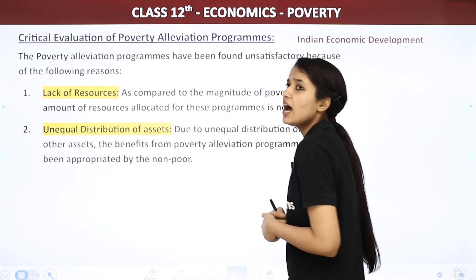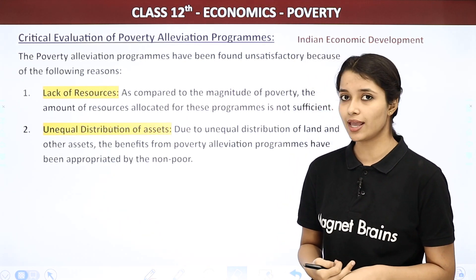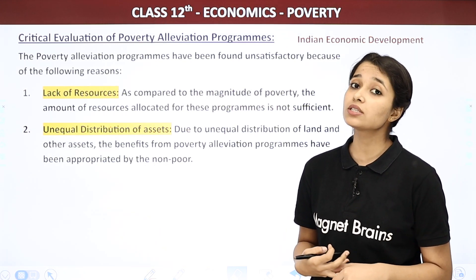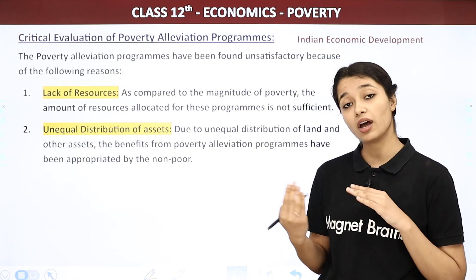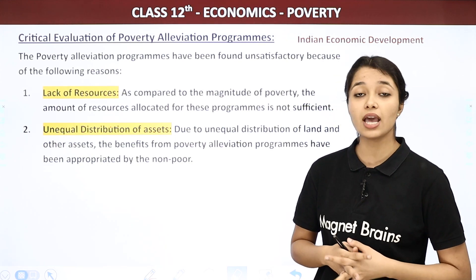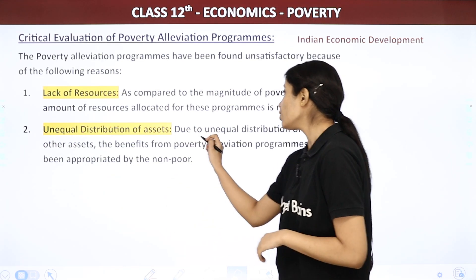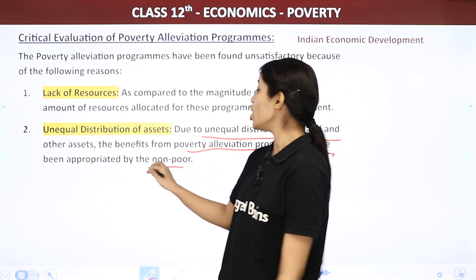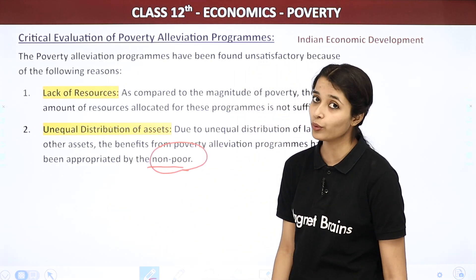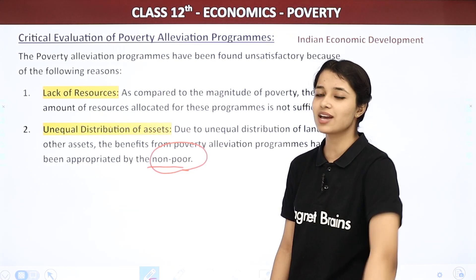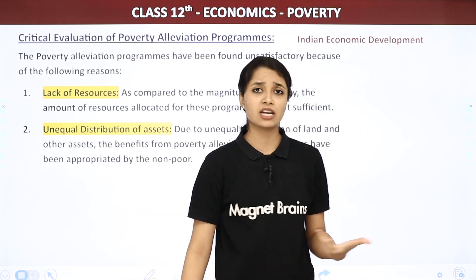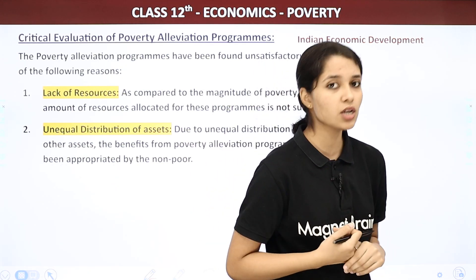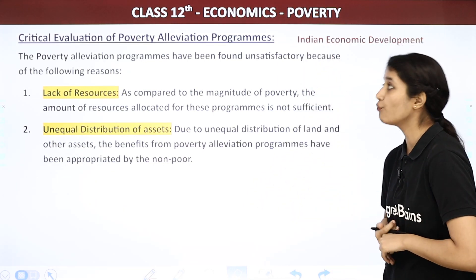Second reason: Unequal distribution of assets. There is inequality in our economy — some have a lot of money and assets, others do not. Due to the unequal distribution of land and other assets, the benefits from poverty elevation programs have been appropriated by the non-poor. The non-poor have the power to use those programs, which were basically meant for poor people, and they benefit themselves instead.